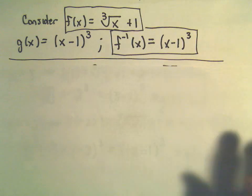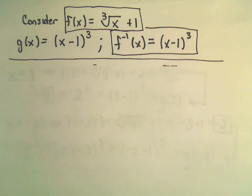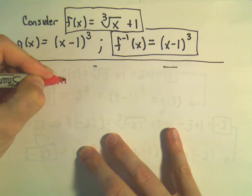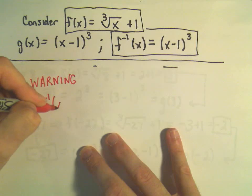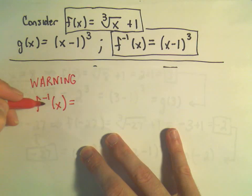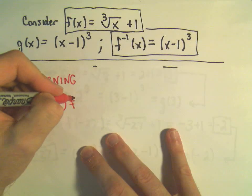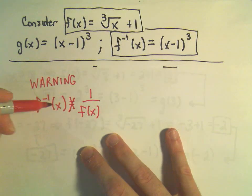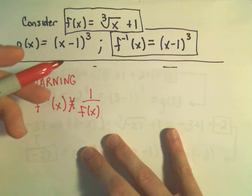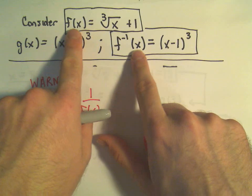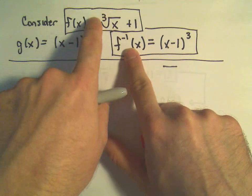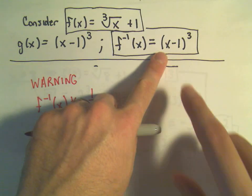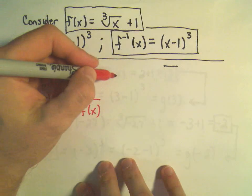A big word of warning: this little inverse sign is not an exponent. This little negative one is not an exponent. So this is not the same thing as one over f of x. It would be nice if that's all you had to do to find the inverse, but if you take one over the cube root of x plus one, you don't get the function x minus one cubed. It's definitely not just one over the original, so be careful about that.